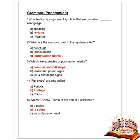Next question: which are examples of punctuation marks? Options are commas and full stop, dollar and pound, plus and minus signs. Option A is correct — commas and full stop. Next question: a full stop is also called what? Options are period, ending, and point. Option B is correct — ending.